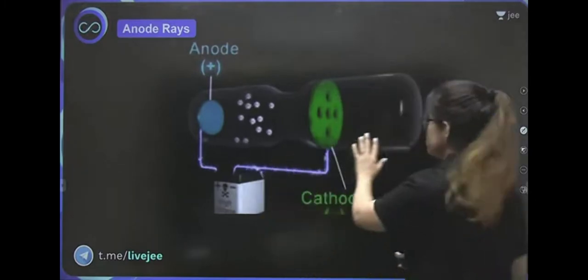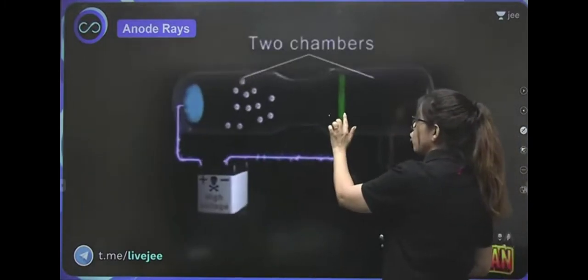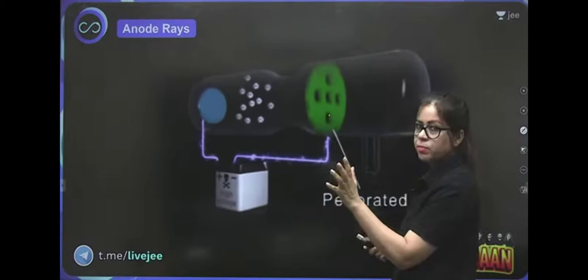This is a discharge tube. This is the cathode. There is a cathode. When you apply a high voltage, there are electrons from the cathode.